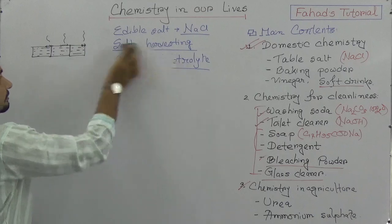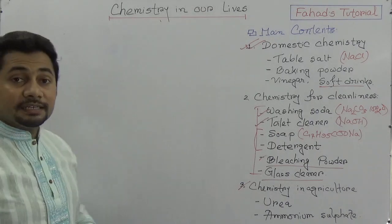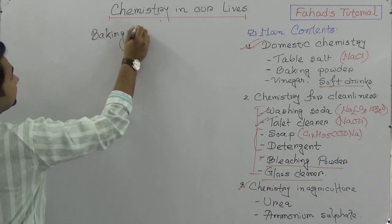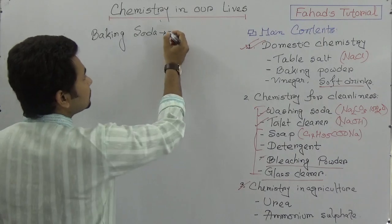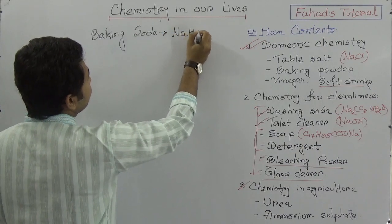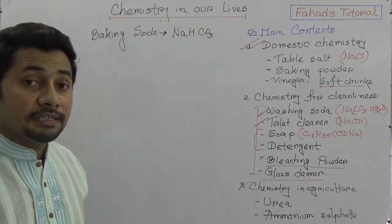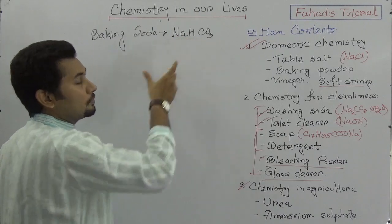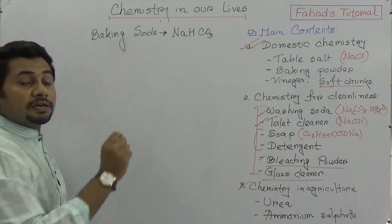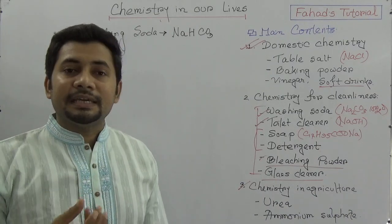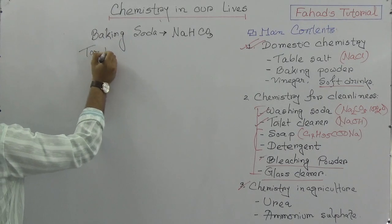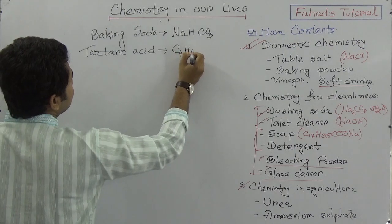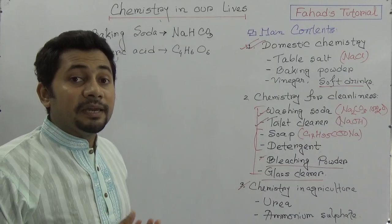When an organic acid — or a weak acid like tartaric acid (C₄H₆O₆) — is mixed with baking soda, we get baking powder. So baking powder is produced with baking soda plus tartaric acid. The formula of tartaric acid is C₄H₆O₆. So you must know that baking powder is produced when baking soda is mixed with tartaric acid.